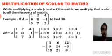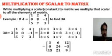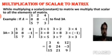For example, matrix A of order 3 by 3 has 9 elements: 1, 2, 4, 0, 8, minus 1, 5, 7, 3. If we want to find 3A, we multiply 3 with all the elements: 3 into 1, 3 into 2, 3 into 4, 3 into 0, 3 into 8, 3 into minus 1, and so on. The result is 3, 6, 12, 0, 24, minus 3, 15, 21, and 9.